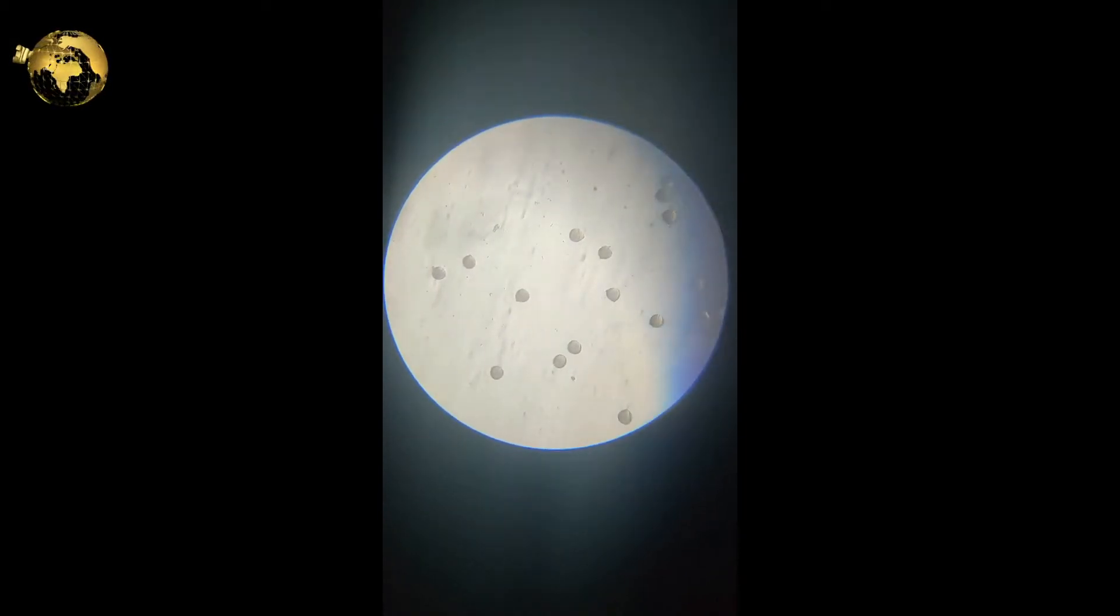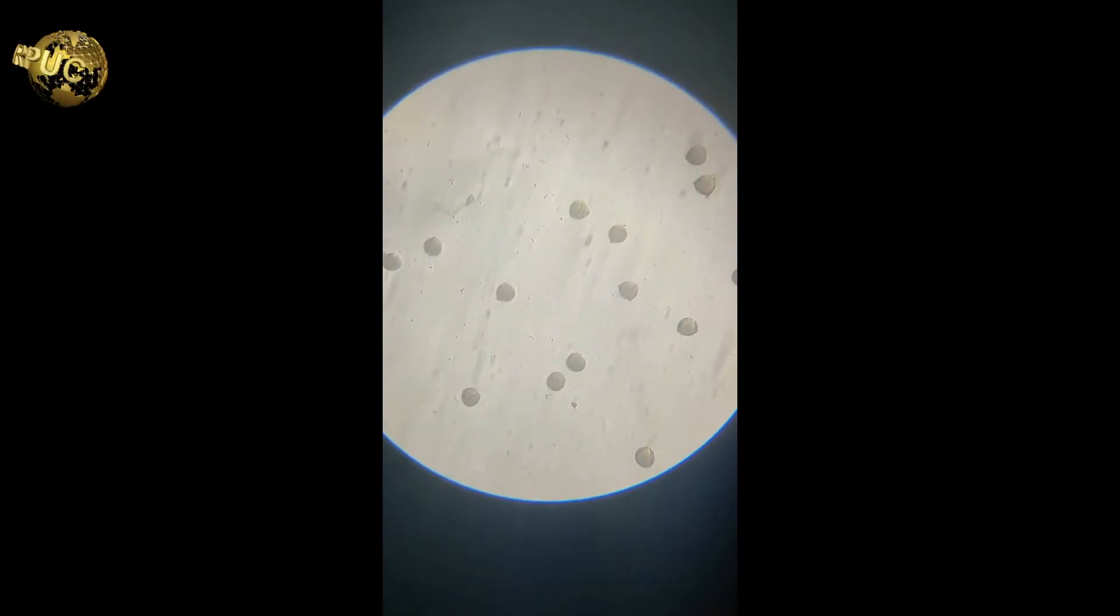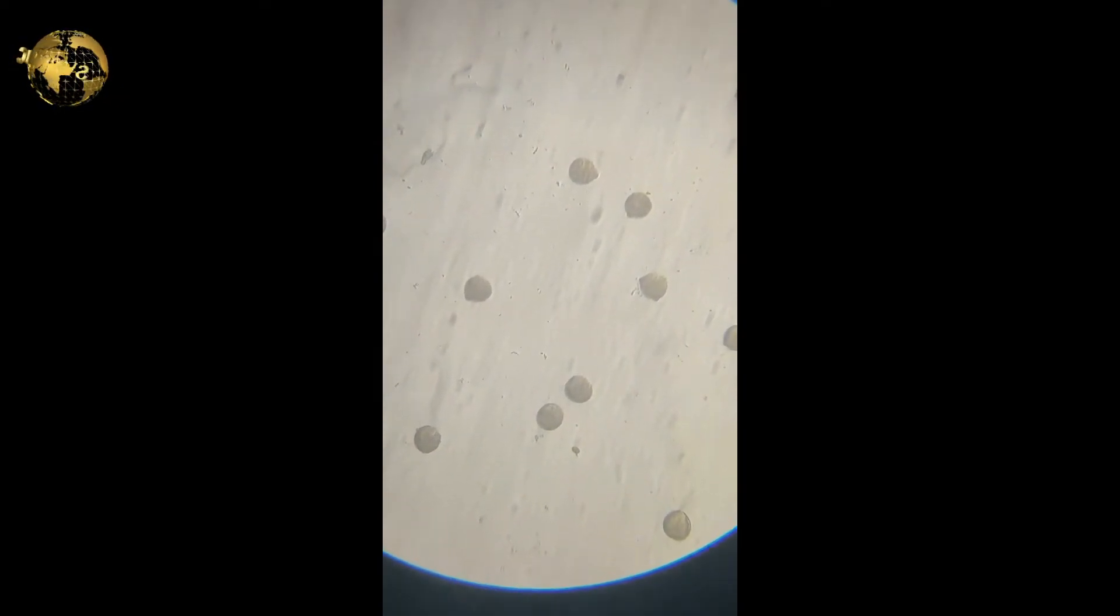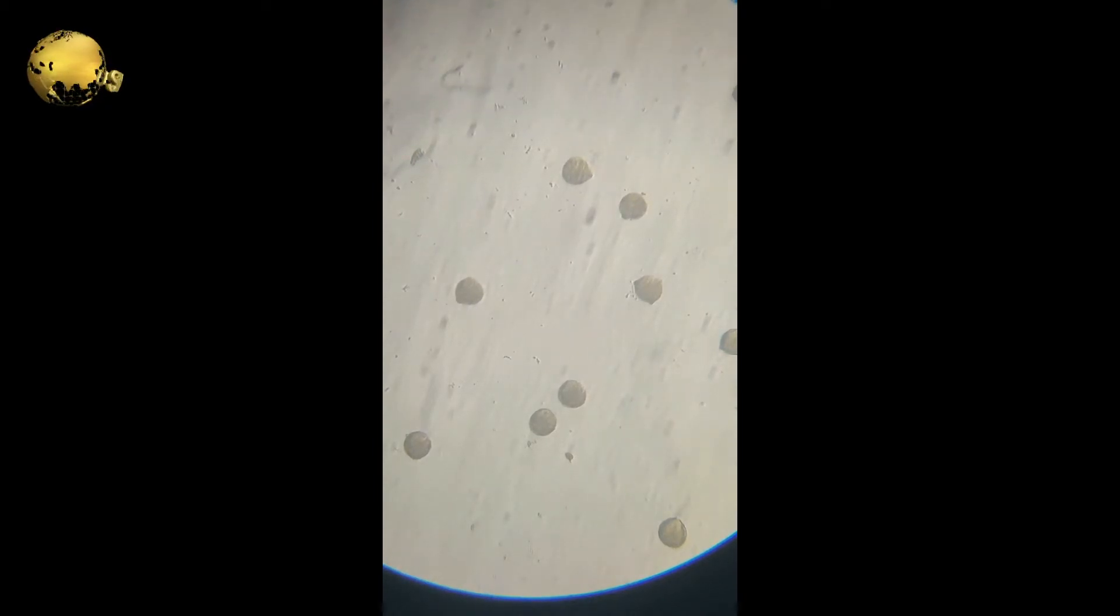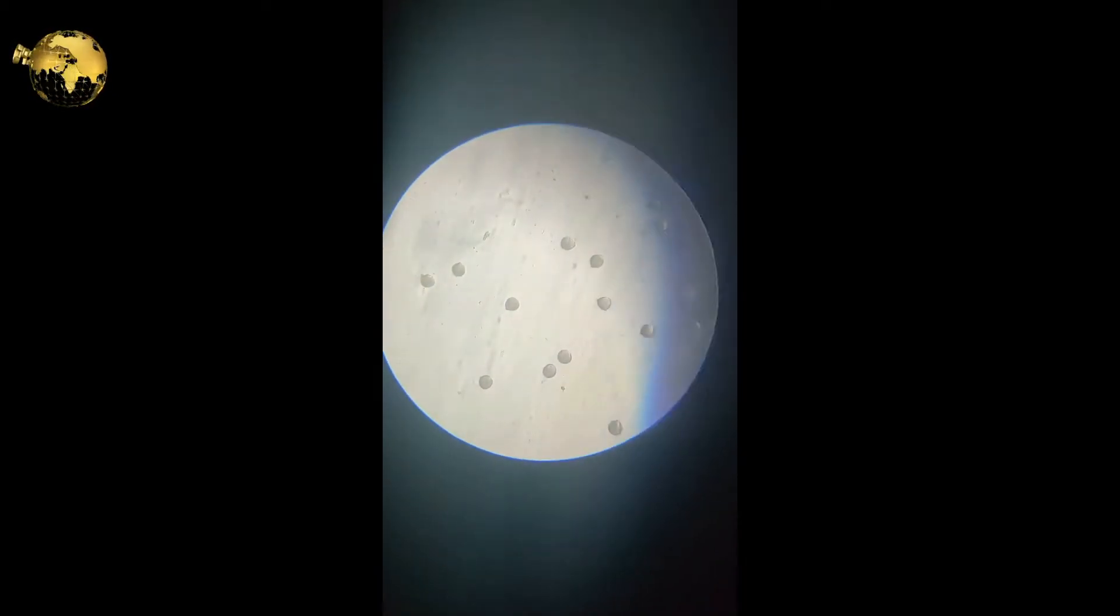The pollen grain is uninucleated in the beginning. At the time of liberation, it becomes two cells with a small generative cell and a vegetative cell. Later in the nutrient medium, the pollen grain germinates and forms pollen tubes.